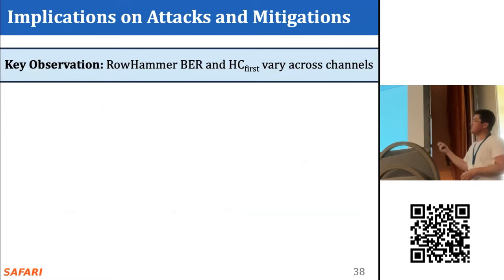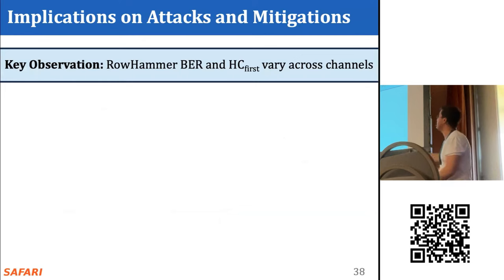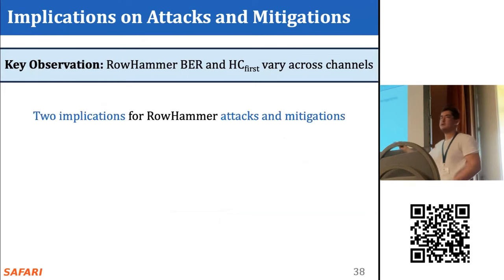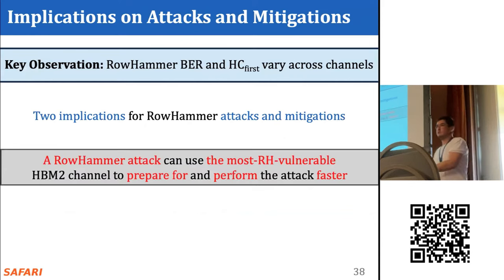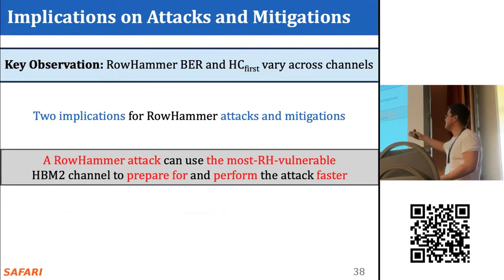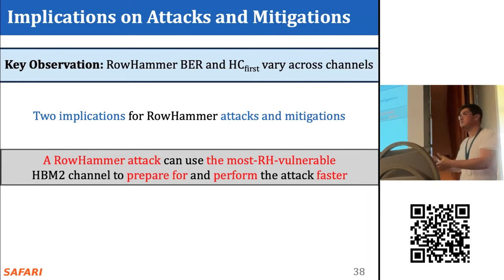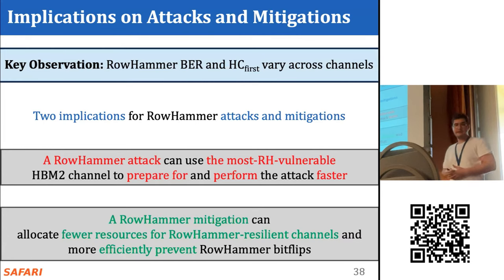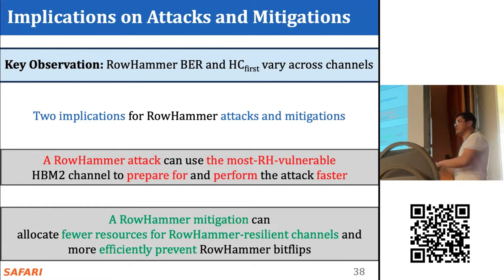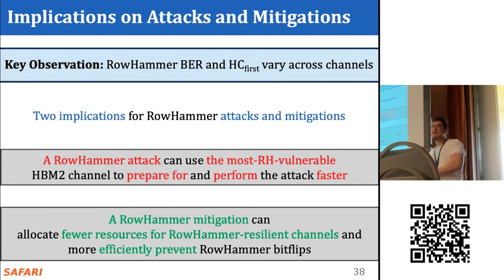The key observation that bit error rate and HC_first change across channels has two important implications. For attackers: they can leverage the most vulnerable channel to accelerate both preparation and attack phases, potentially taking over systems more quickly. For mitigations: fewer resources can be allocated to rowhammer-resilient channels and more to vulnerable channels, enabling more efficient mitigation mechanisms.